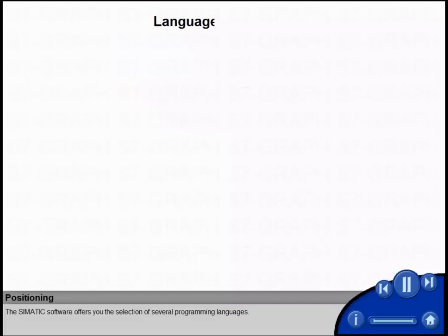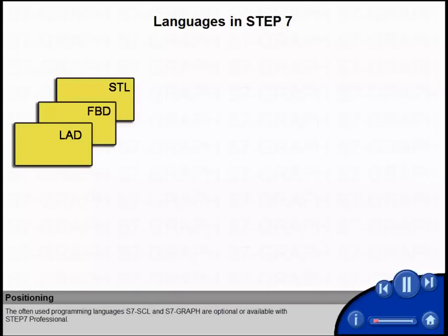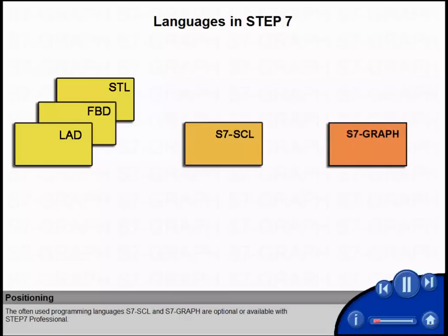The Siemens software offers you the selection of several programming languages. The basic package contains the languages Ladder, FBD and STL. The often used programming languages S7-SCL and S7-GRAPH are optional or available with STEP 7 Professional.